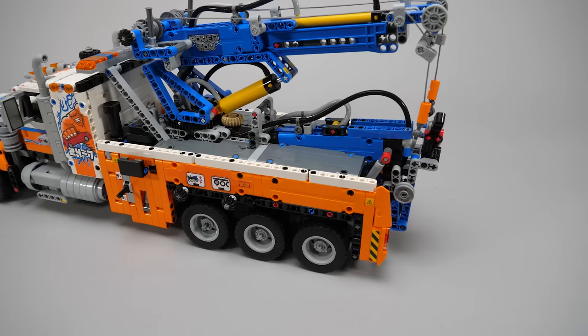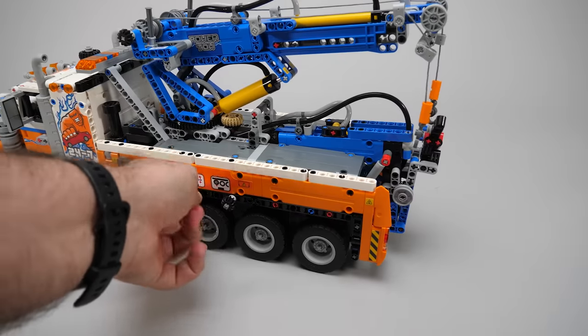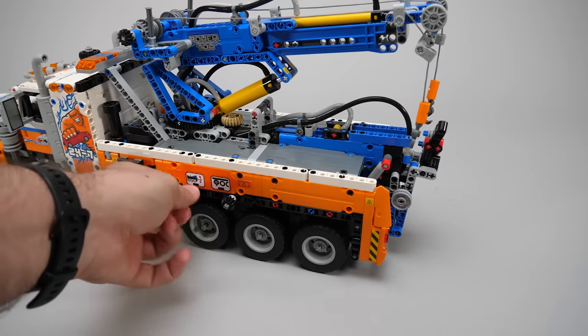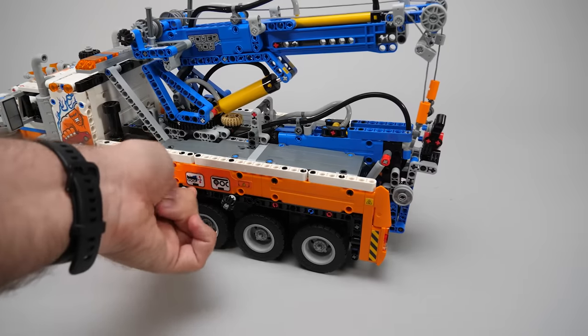The truck is full of working functions. Let's see the manual ones first. This one controls the elevation of the wheel lift. It takes quite some time and a lot of turns to raise it, but I think there's a reason for that. More about this in a minute.